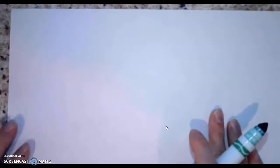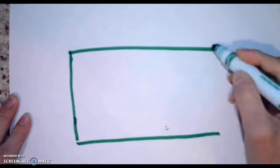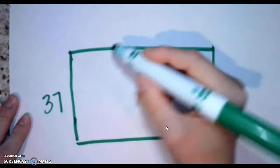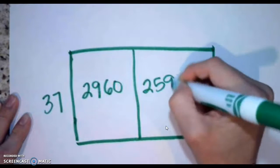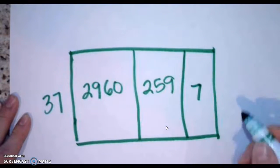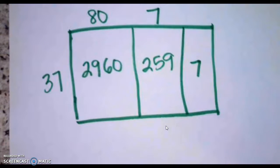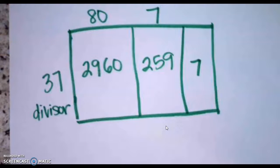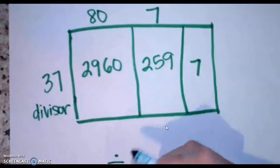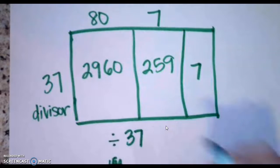What if we were given an area model and needed to work it backwards? Let me draw an area model here. Let's say I had 37 on the outside, 2,960 in one spot, 259 in another, and 7 in the last spot, with an 80 and a 7 on top. This is a solved area model, and we want to figure out what division problem it's actually solving. We do know our divisor — remember, the divisor always goes on the left-hand side. We are dividing by 37.